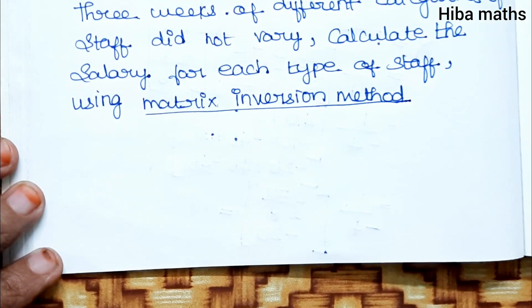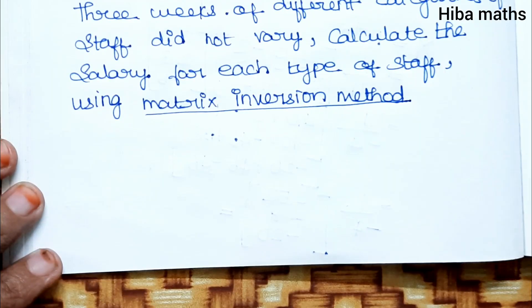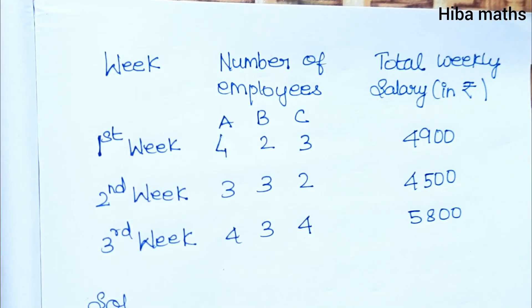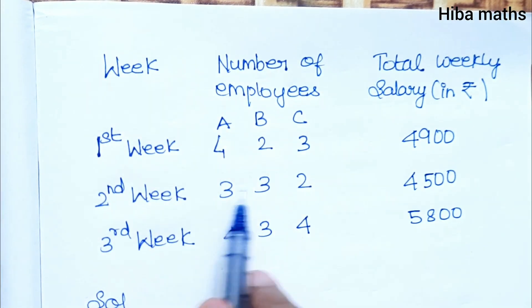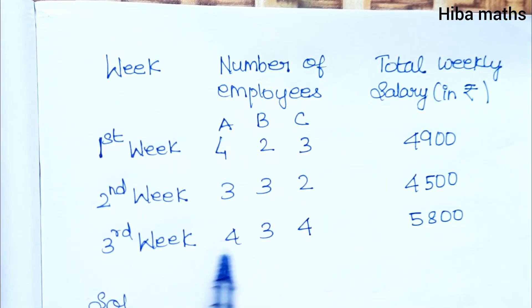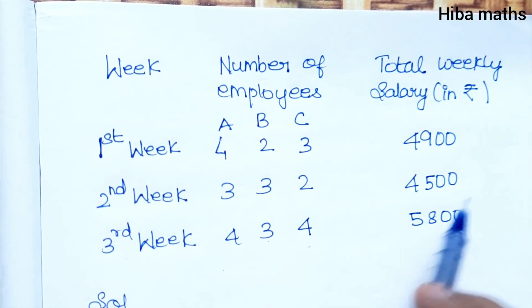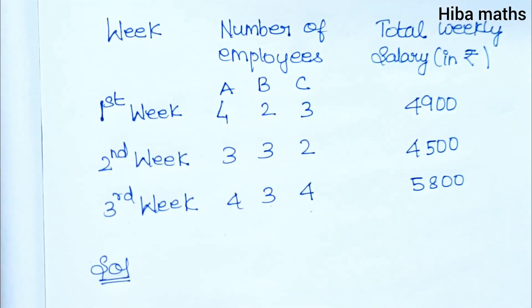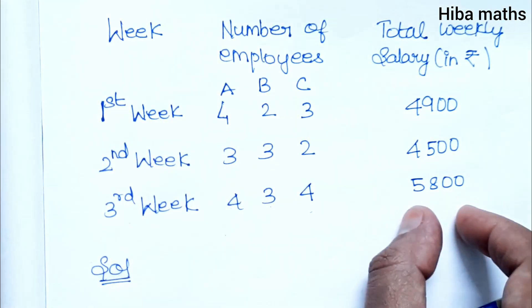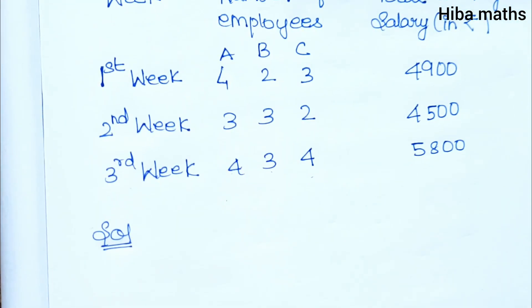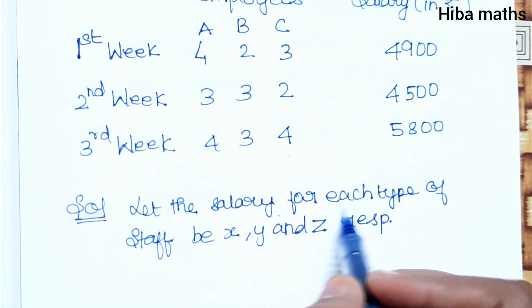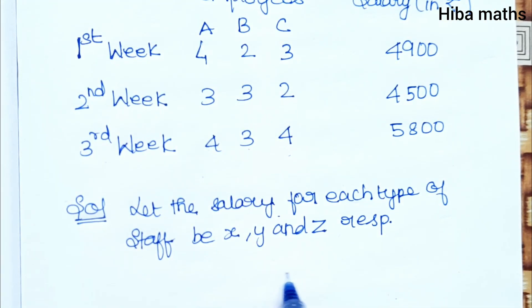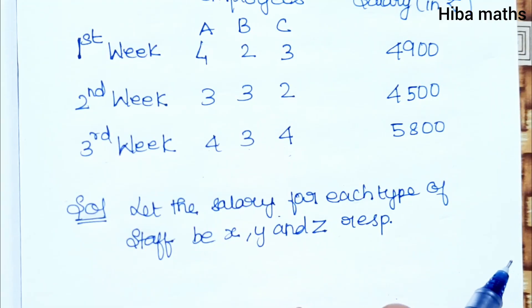So matrix inversion method is given for 3 types x, y, z. In the table column, first week: 4, 2, 3; second week: 3, 3, 2; third week: 4, 3, 4 — and total salary. Let the salary for each type of staff be x, y, and z respectively.